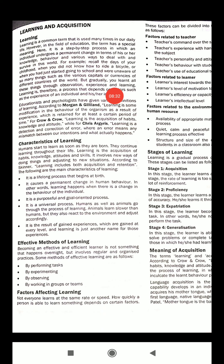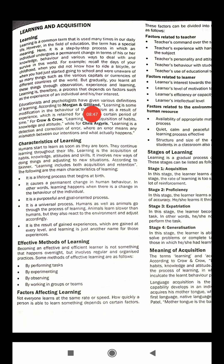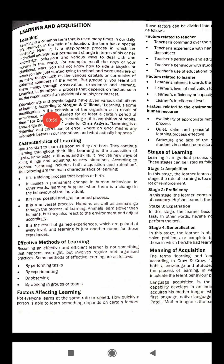Now we are going to discuss according to some educational scientists. Educationists and psychologists have given various definitions of learning. According to Morgan and Gilliland, learning is a modification in the behavior of the organism as a result of experience. From our experience, we get a definite modification in behavior.